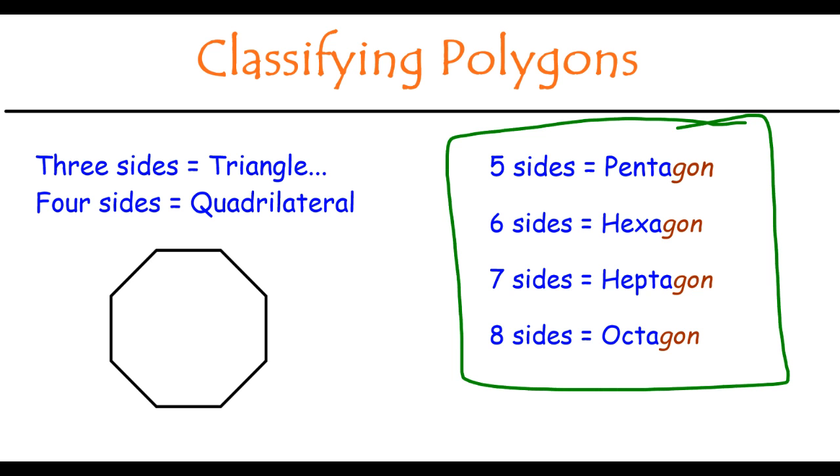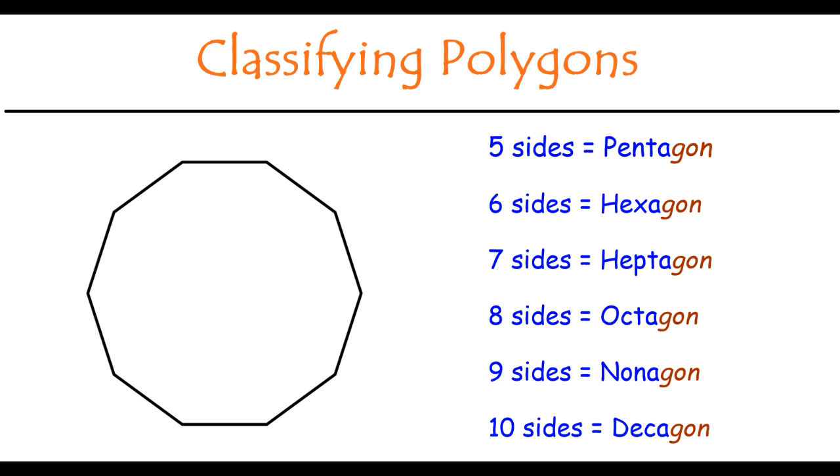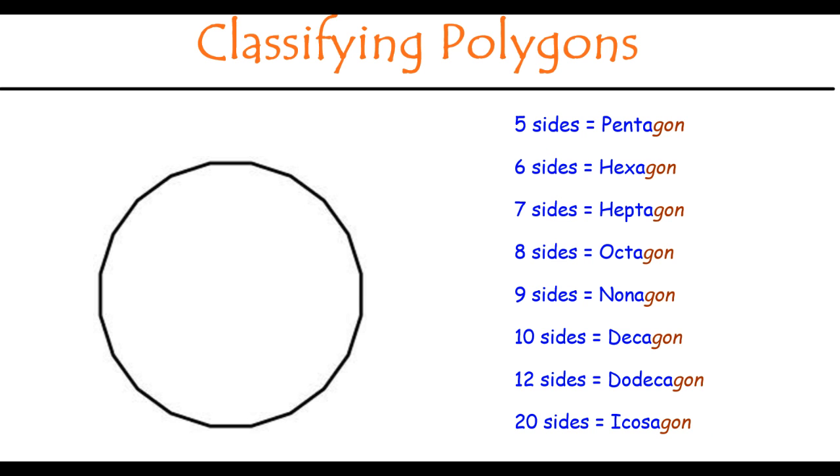Once we get beyond octagon, we have a few special names for things too. A nine-sided shape is called a nonagon, a ten-sided shape is called a decagon, a twelve-sided shape is called a dodecagon, and then we can jump to a twenty-sided shape, which is called an icosagon. Go ahead, pause the video now and write down these four types of shapes, again, based all on the number of sides that they have.